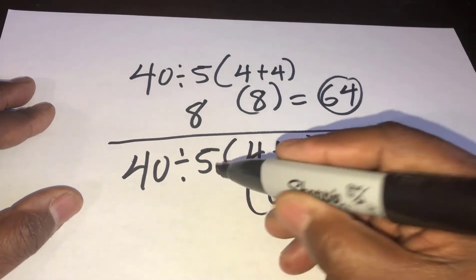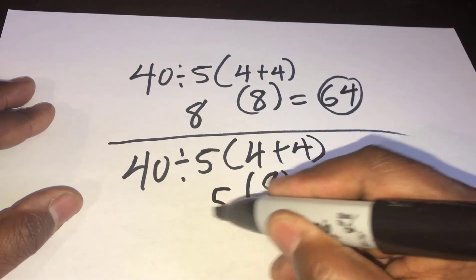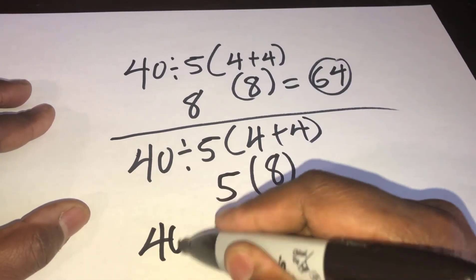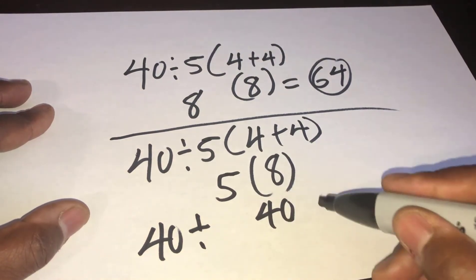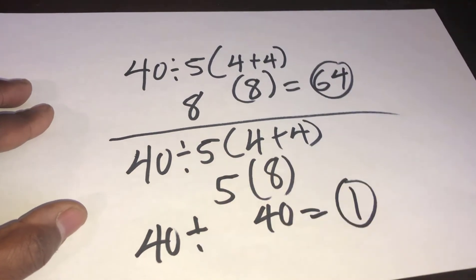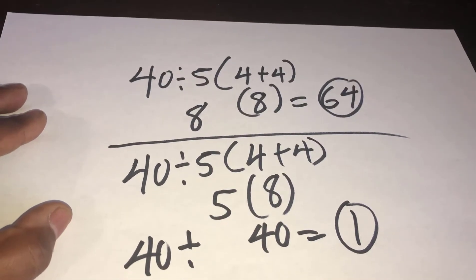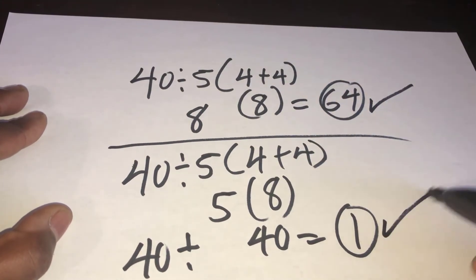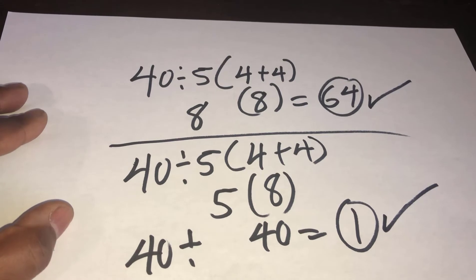And then some people go with the 5 times 8, which is 40. So then you have your 40 divided by 40 equals 1. So which one is the correct answer? Is it the 64 or the 1?